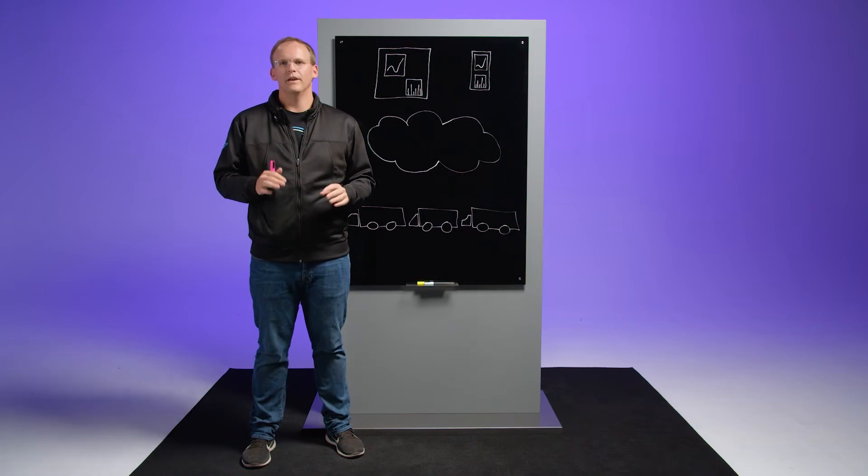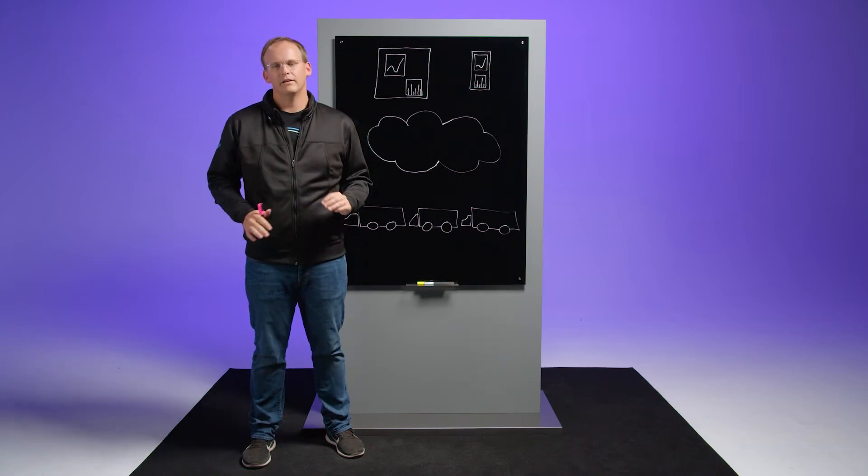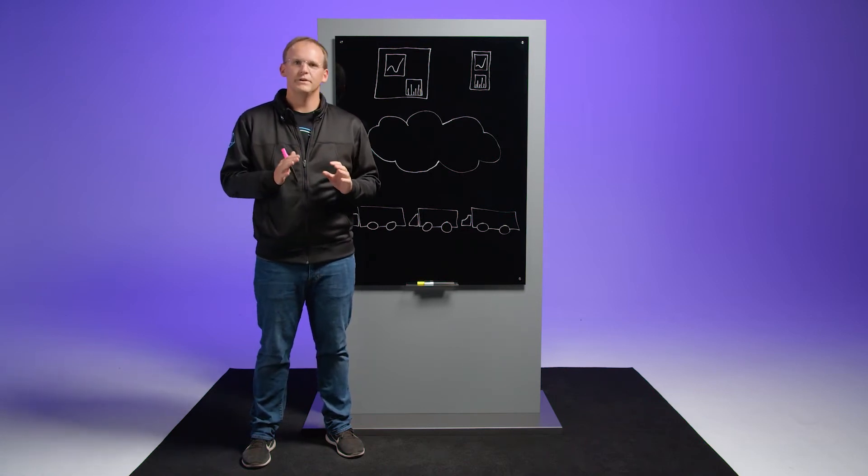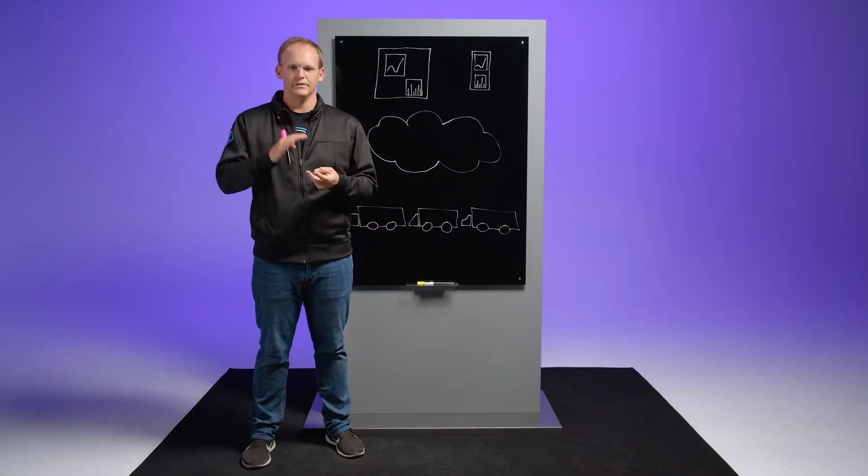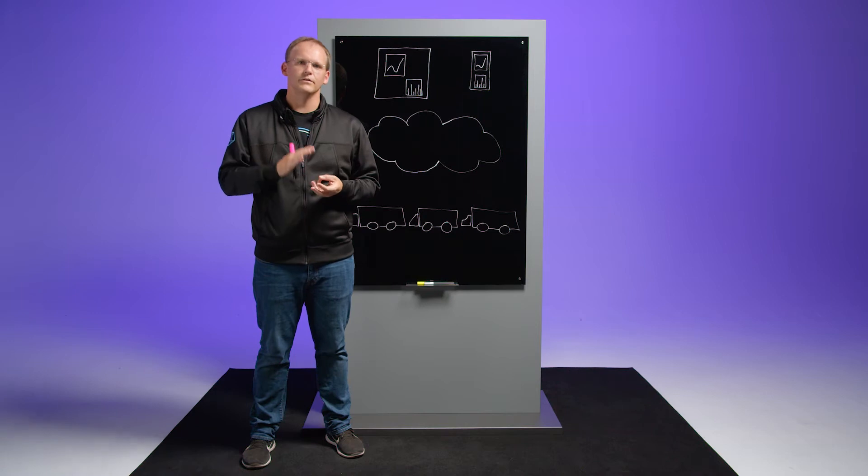Fleet management systems all work the same way. Each truck has an onboard diagnostic system that's constantly streaming data about the truck's behavior. That includes GPS position, driver behavior, fuel efficiency—all of that data collected in real time about the truck.